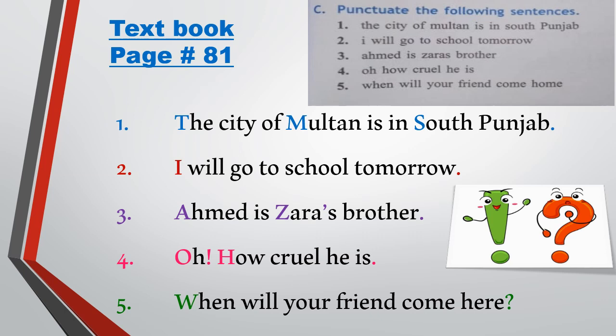The first sentence is: 'The city of Multan is in South Punjab.' We need to make the first letter capital — T is capital. Multan is a proper noun, so M is capital. South is also capitalized, so S is capital. And we put the full stop at the end of the sentence.